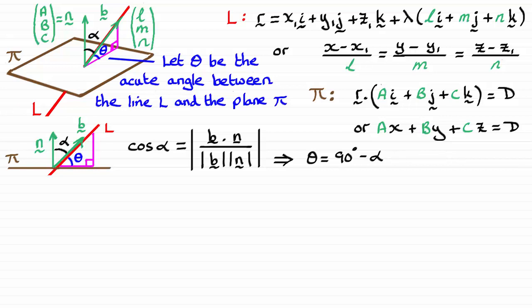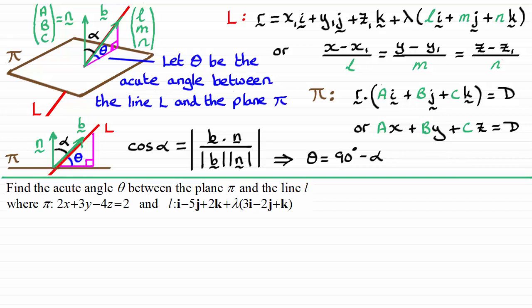OK, so I've got a question here which we'll just run through. It's to find the acute angle theta between the plane pi and the line L, where pi has this Cartesian equation 2x plus 3y minus 4z equals 2. And the line L has this parametric vector form i minus 5j plus 2k plus lambda, multiplied with the vector 3i minus 2j plus k.